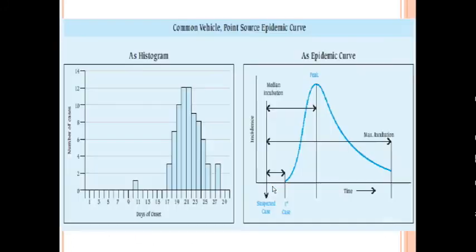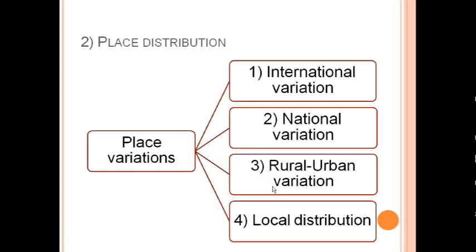Coming to place distribution — variations in the occurrence, distribution, and determinants of disease with respect to place can be international, national, rural-urban, or local. Some diseases are more common in some countries and lesser in others. Within a country, there can be variation, rural-urban variation, and even local distribution within a city where certain localities have higher disease frequency.